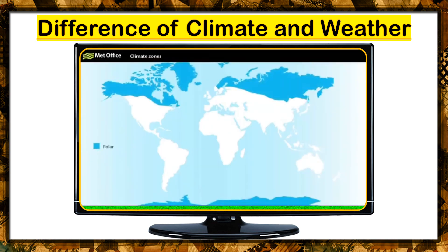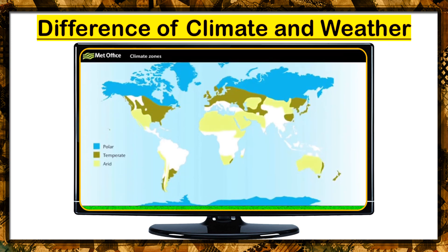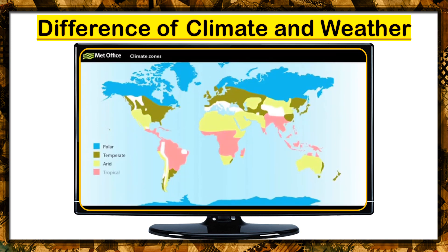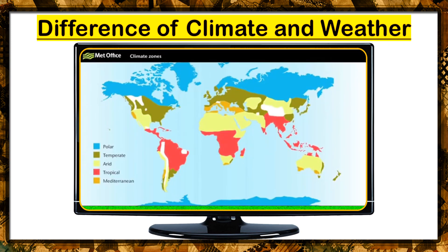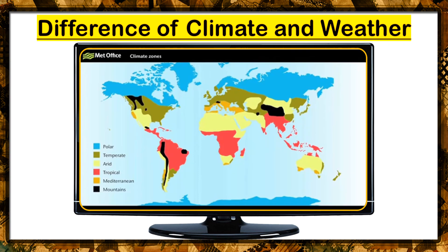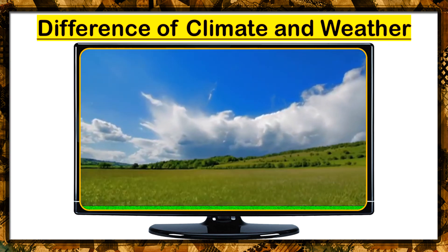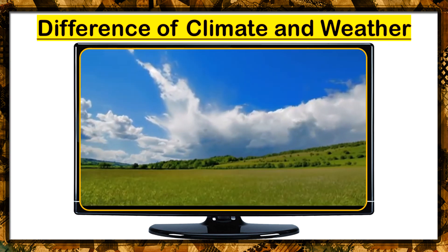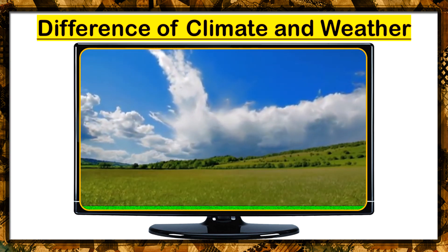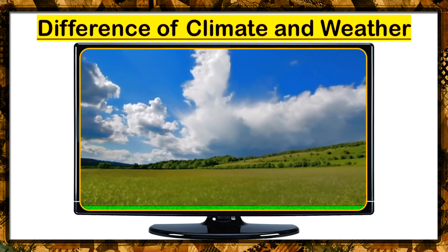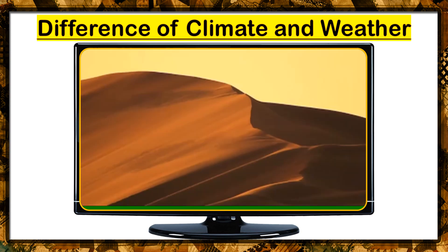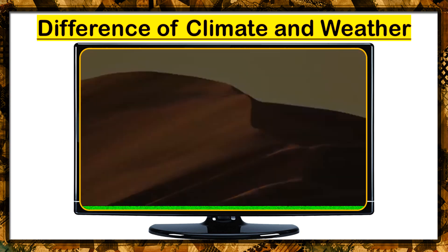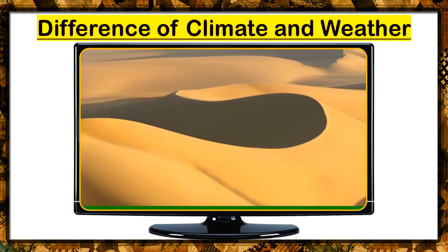Scientists have been able to define climate zones around the world. Here in the UK, we have a temperate climate that is neither especially hot nor cold, wet nor dry, when compared to other climates. Ours is a very different climate to that in the Sahara, for example, which is known as arid, because throughout the year the weather is dry and hot.